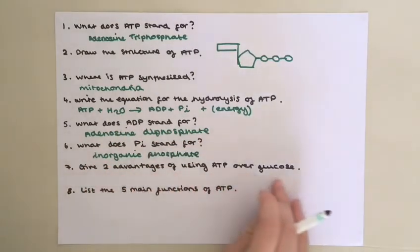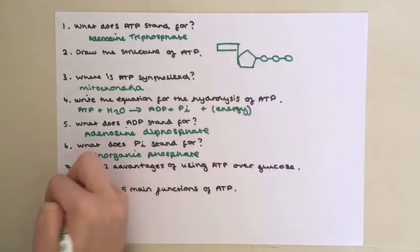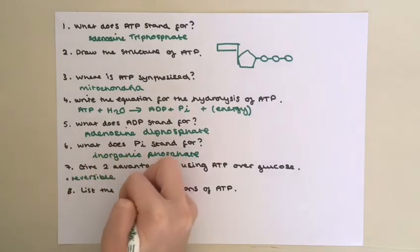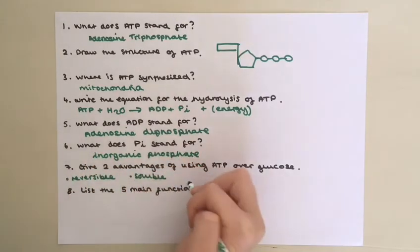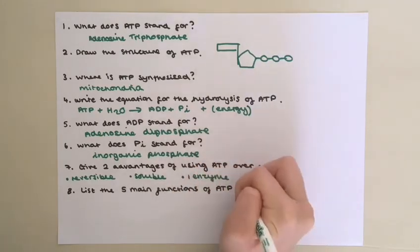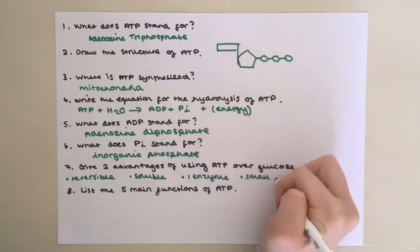Give two advantages of using ATP over glucose. So you could have had it's a reversible reaction, it's soluble so easily transported across membranes, only one enzyme required to release that energy, and it's small, manageable amounts of energy.